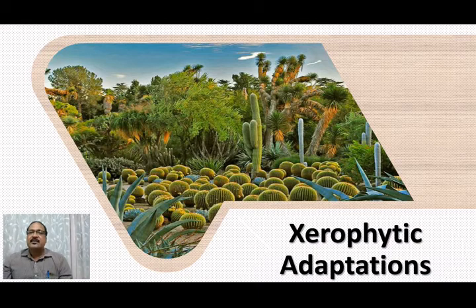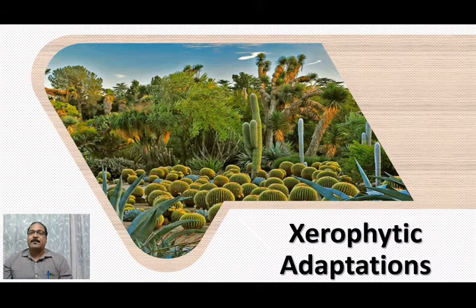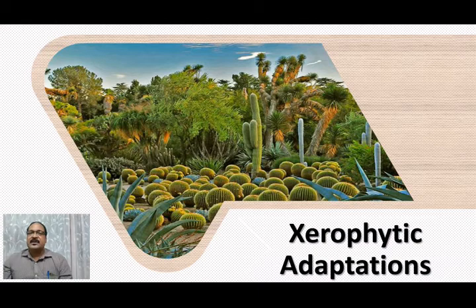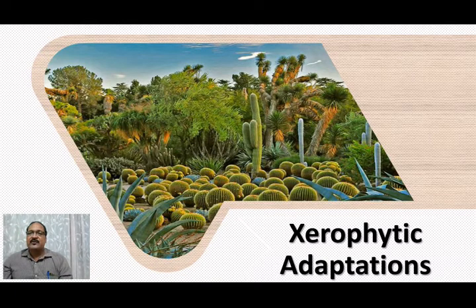The second type of xeric habitat is habitats that are physiologically dry — places where water is present in excess amount, but it cannot be absorbed by the plant easily. Such habitats may be too salty, too acidic, too hot, or too cold. That is why we see that though Typha is a hydrophyte, it does develop certain xerophytic characters.